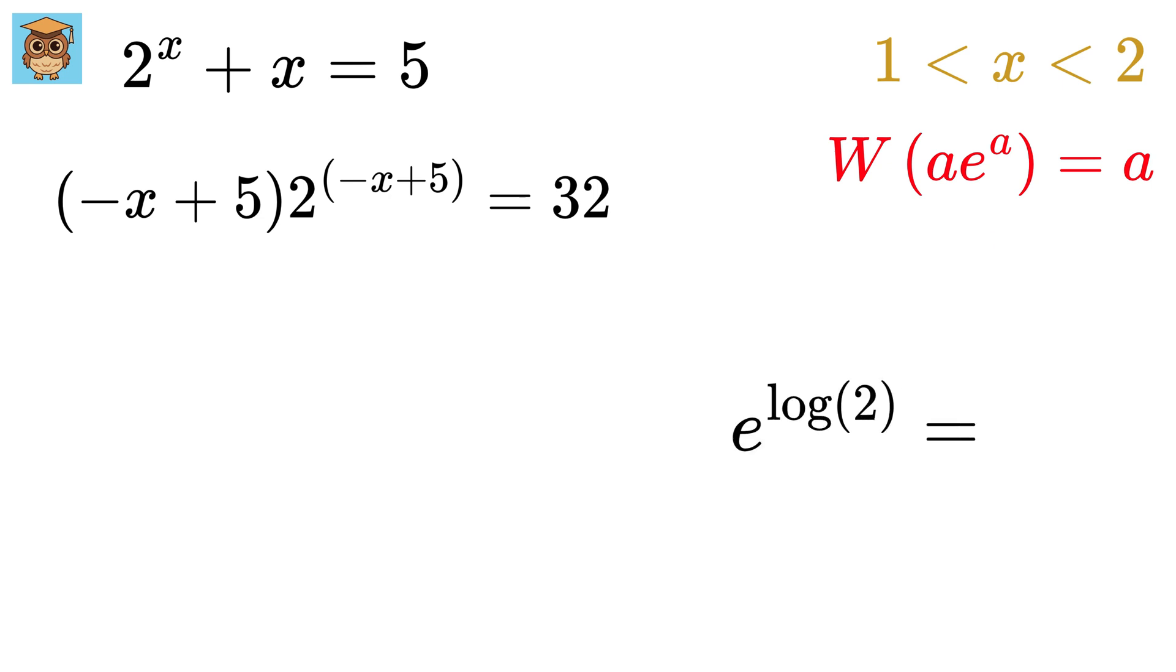For that, we know e raised to log of 2 equals 2 itself. Some people call it ln, and some call it log. We can use whatever we want. We just mean it to be a natural logarithm. So this will become minus x plus 5 times e raised to log 2 whole, raised to minus x plus 5 equals 32.